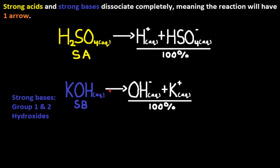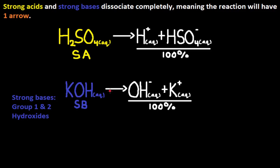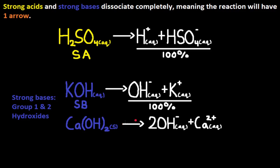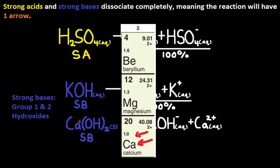Let's look at the dissociation reaction for Ca(OH)2. It will have one arrow since Ca(OH)2 is a strong base — it has a hydroxide and Ca is in group 2 on the periodic table. This one arrow means Ca(OH)2 dissociates completely, or 100%, into 2 OH⁻ and Ca²⁺. Whenever we are given strong acids or strong bases, what we really have are their ions in dissociated form.